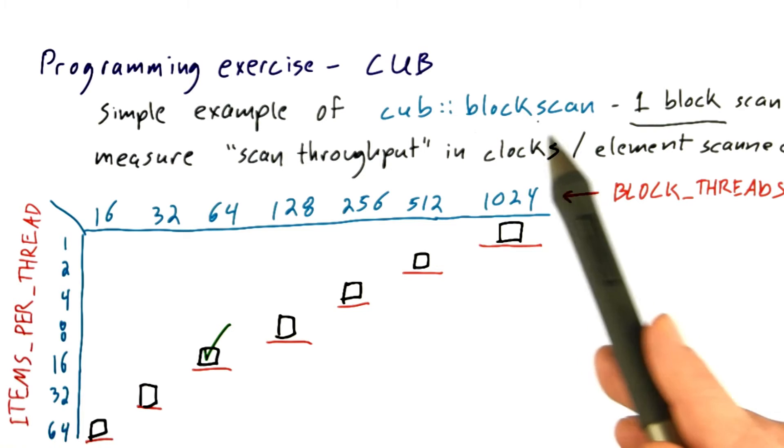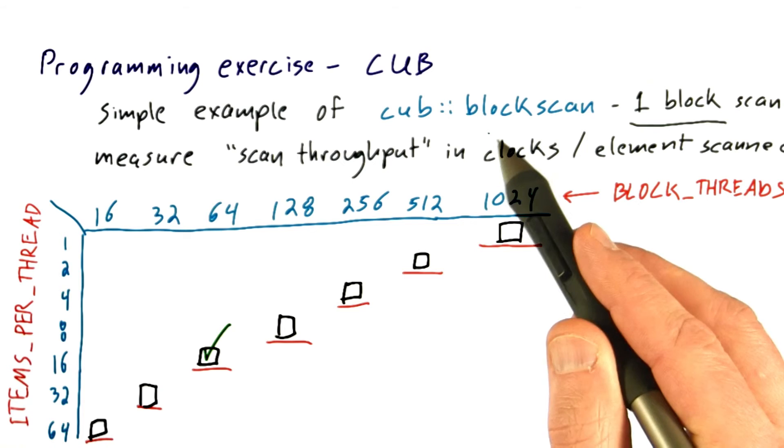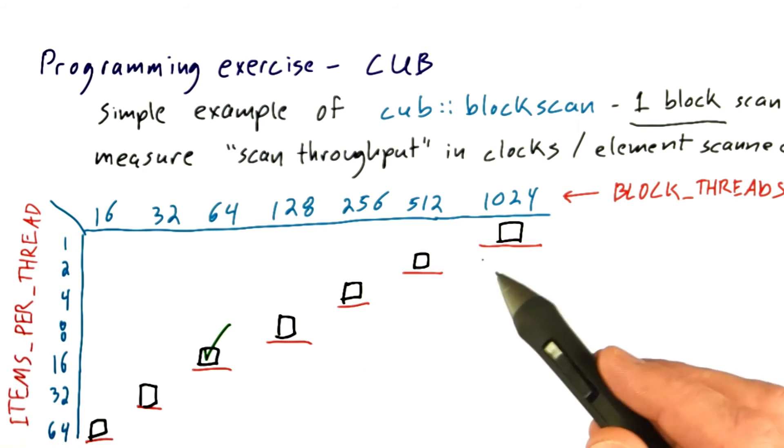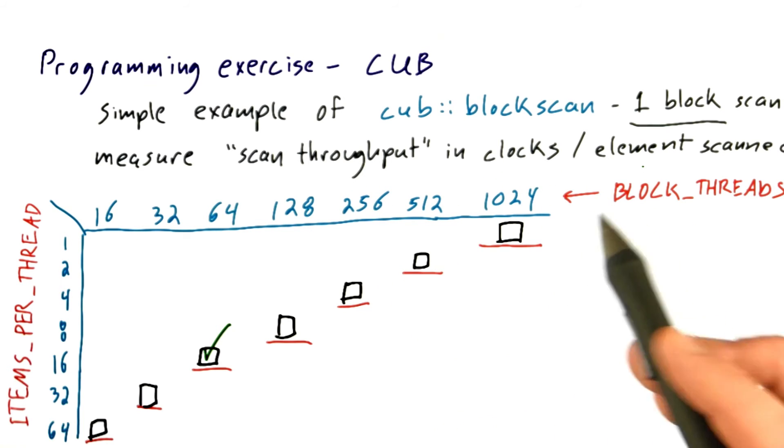There's different varieties of block scan, for example, there's work efficient and step efficient varieties of block scan. And so experiment a little bit and see how fast you can get this scan throughput, how few clocks you can spend per element scanned.